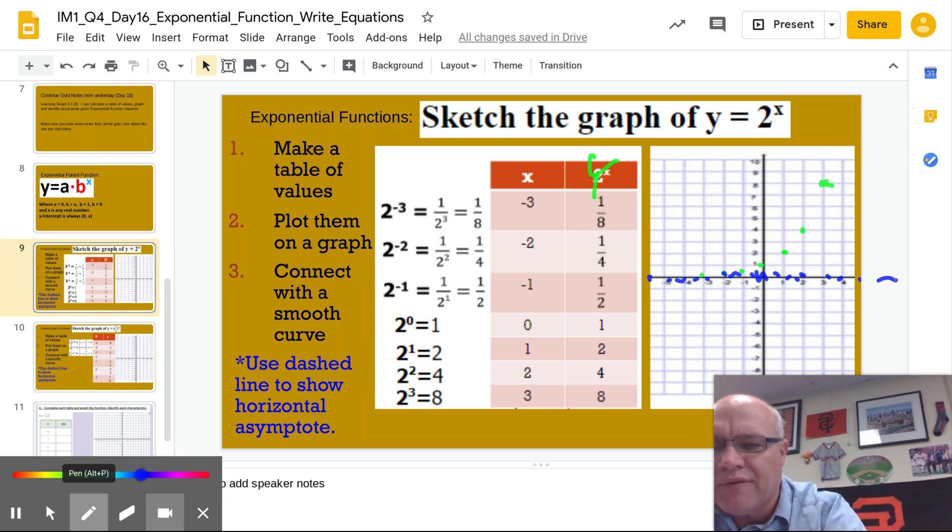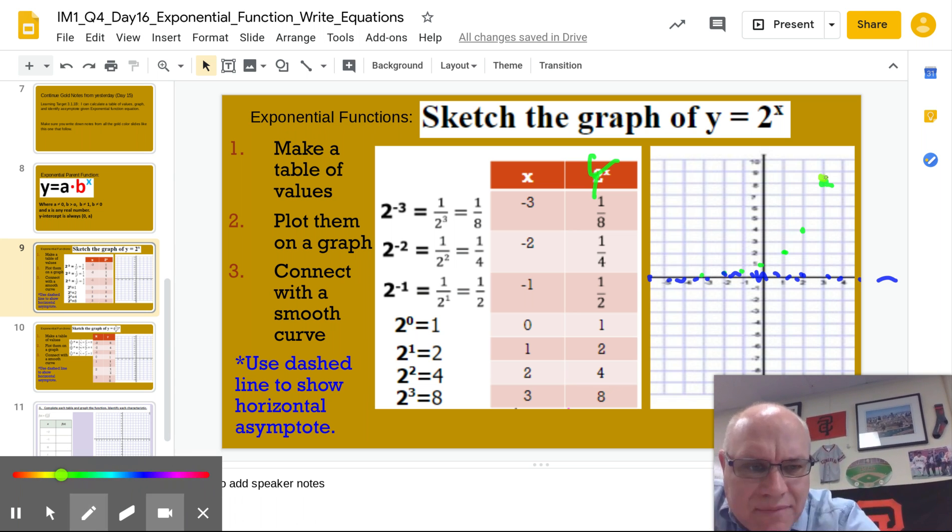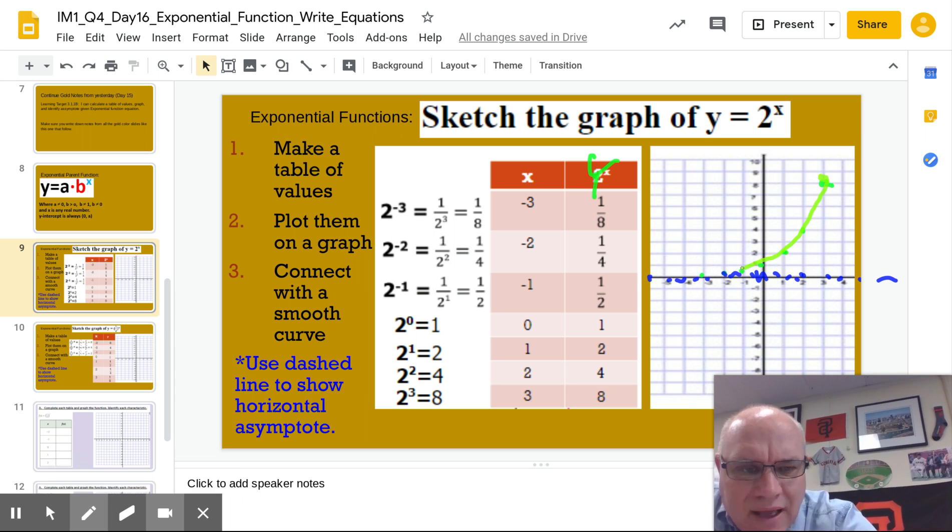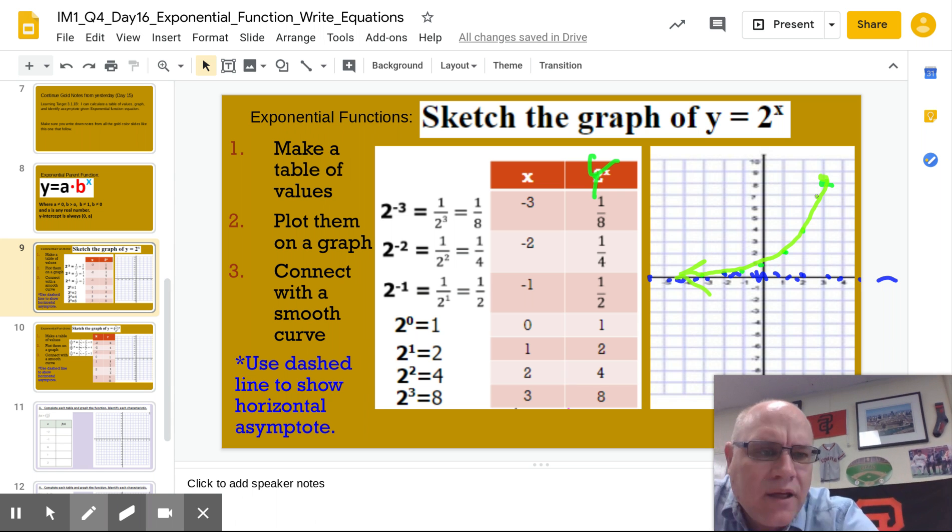So our curve, now we can finish up our curve. We just connect the points. Comes down, comes down. And then I have to put a little arrow there. And that arrow is saying it's going up, up, and away. It's still going out. There's our exponential curve.